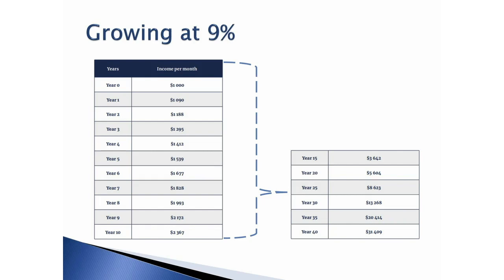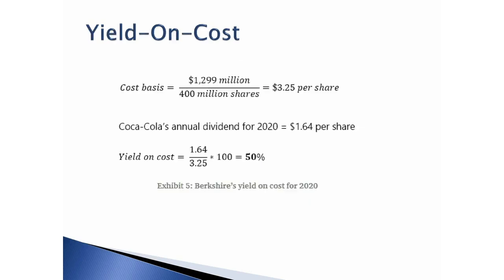Not too much exciting happening at first. But look at year 30. When your fixed income's purchasing power would be halved, you're actually receiving $13,268 a month. That needs to take into account inflation as well, but you're well outpacing inflation with an income stream growing at 9%. That shows you the power of having a retirement where the amount of money you receive every year increases.